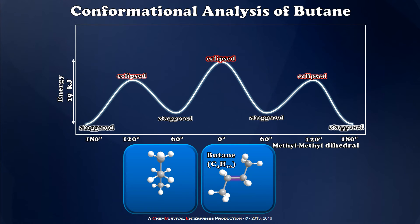When I do this, as I've drawn it, you can see very clearly that the two methyl groups are at a 180 degree dihedral angle to one another — they're as far apart in space as they can possibly be. When we have a molecule like butane in a conformation in which the largest substituents are as far as possible from one another, we refer to this as an anti conformer.